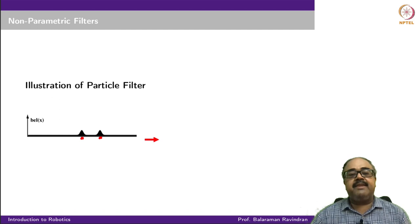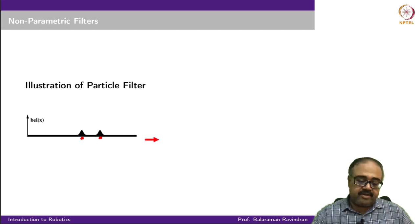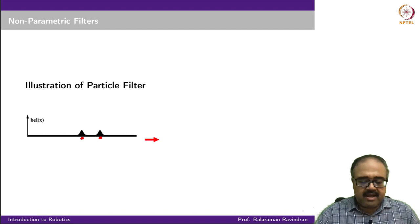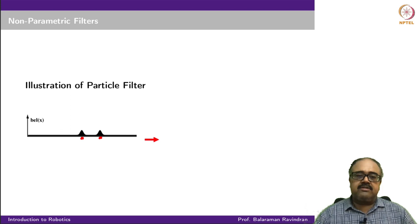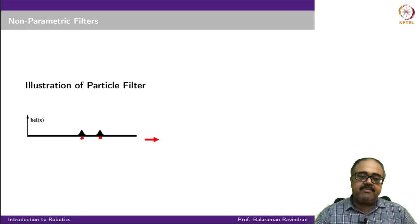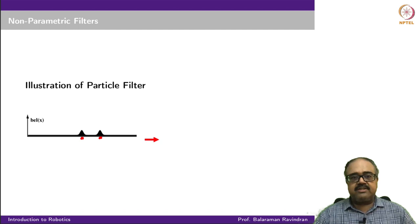Here is a simple belief representation showing something a Gaussian filter cannot do — a bimodal distribution. The state x is a single line; the robot could be anywhere on the x-axis. We assume two peaks: we are unsure whether the robot is at one location or another. Most probability mass is concentrated around these two modes, so many particles represent one mode and another set represents the other, with very few particles elsewhere.